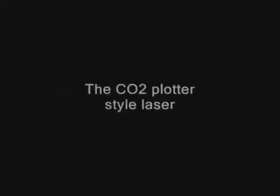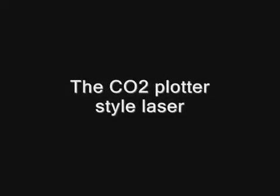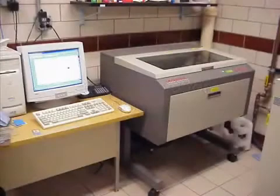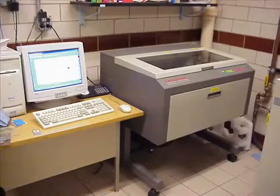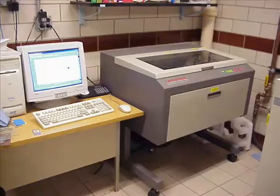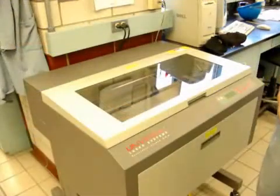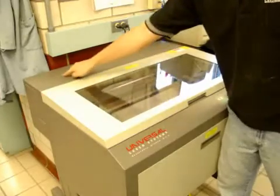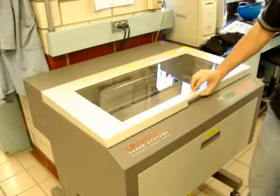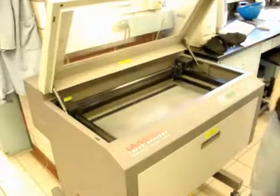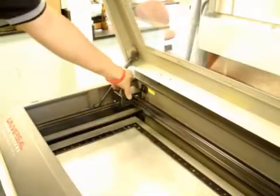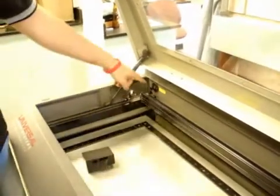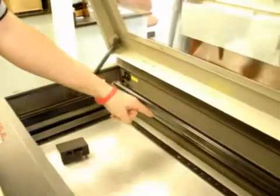First, we will discuss the CO2 plotter-style laser system. The CO2 plotter-style laser system is the machine that is most commonly used by people in the awards and engraving industry. The laser produces its energy by a tube located in the rear of the system. The laser energy exits a window at the back of the marking chamber and is redirected to the marking head by a fixed mirror system.